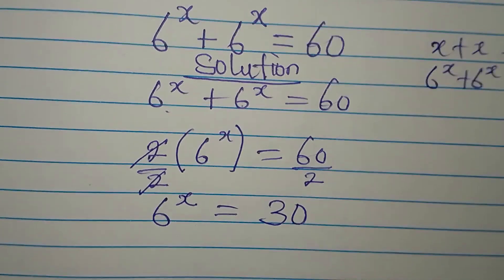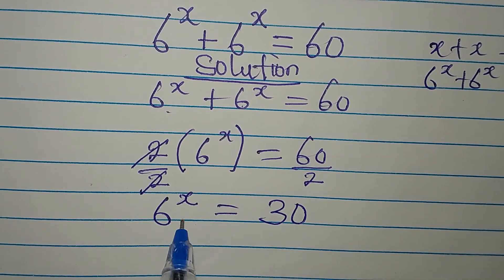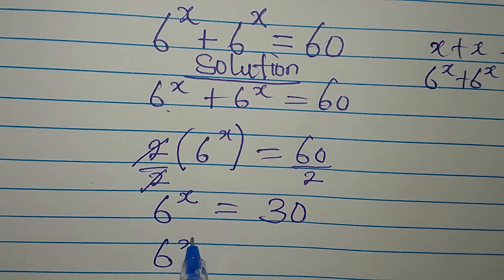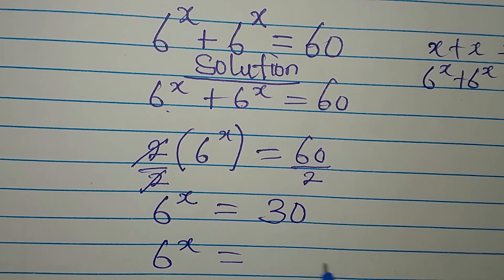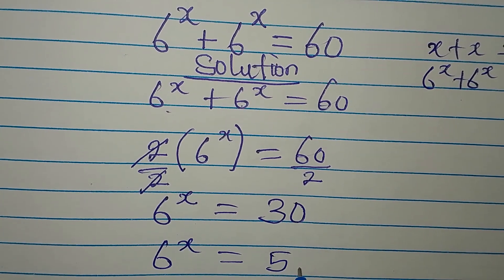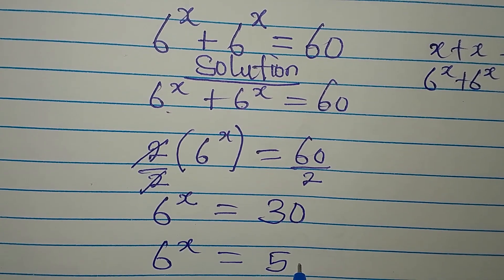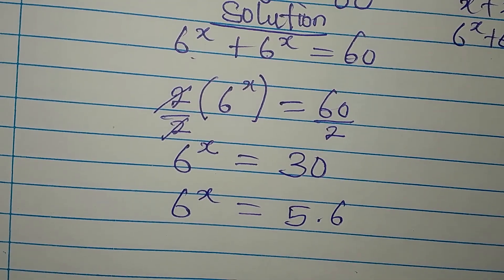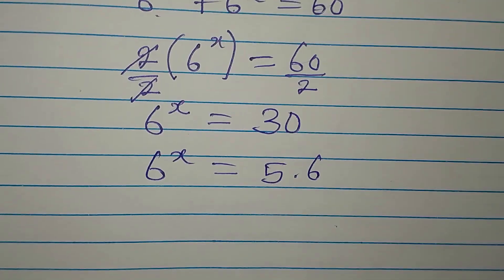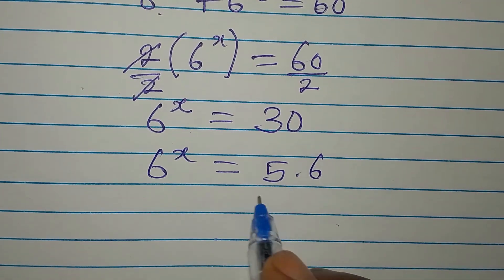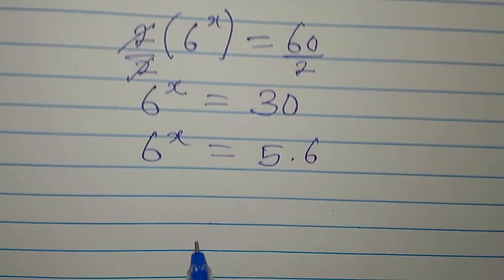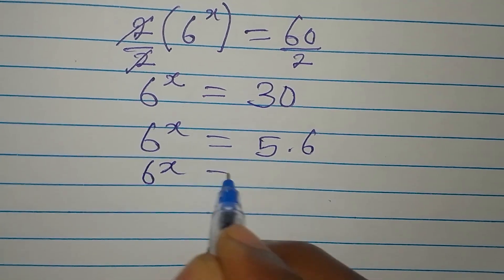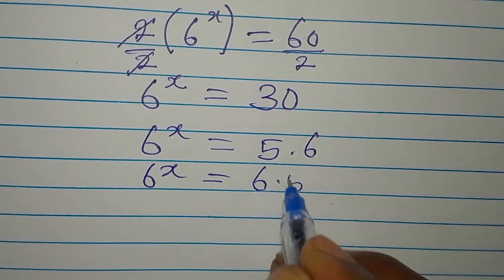Can we write 30 in the form of a power of 6? The answer is no, because 30 can only be written as 5 times 6. So 6 to the power of x is the same as 6 times 5.